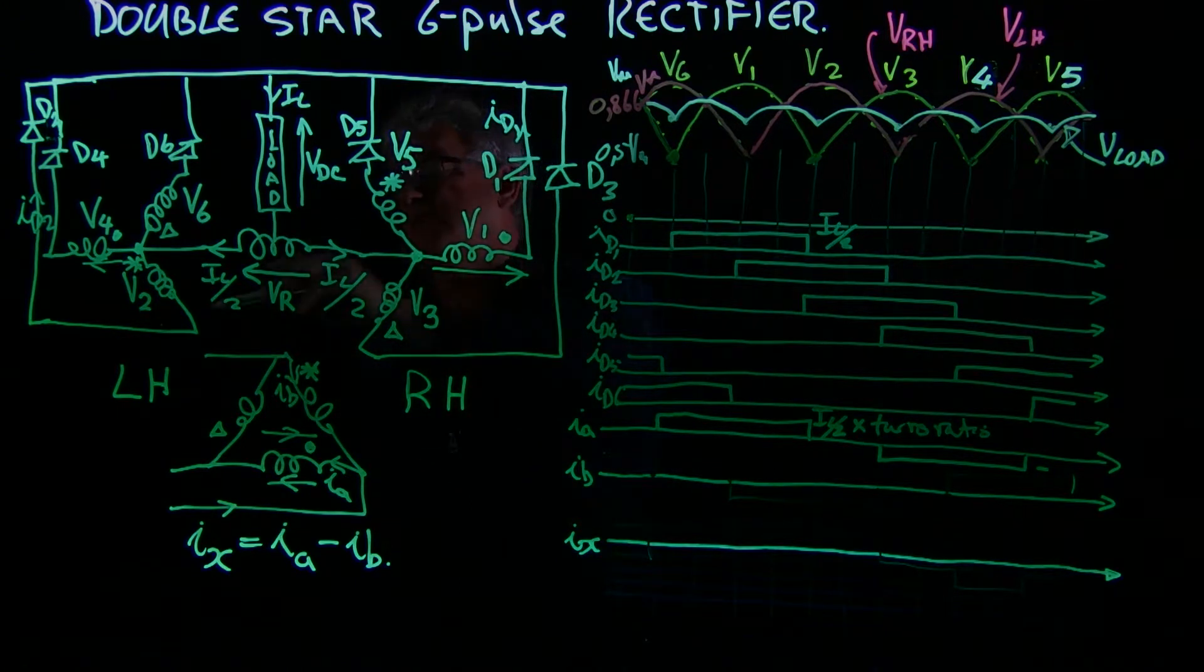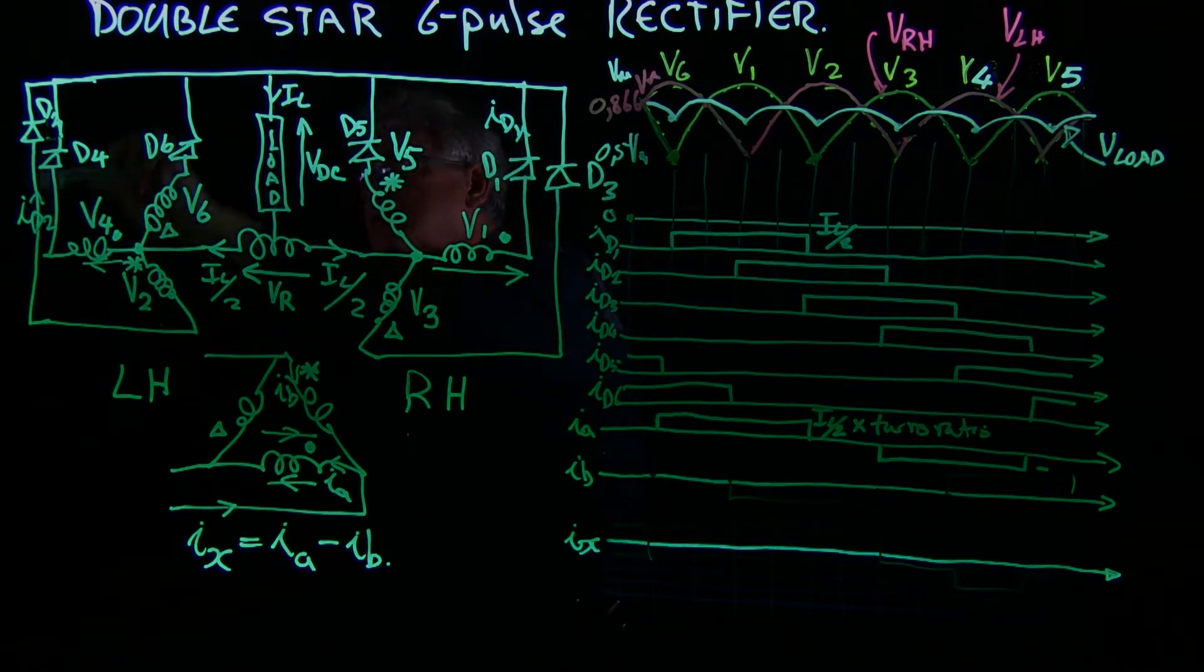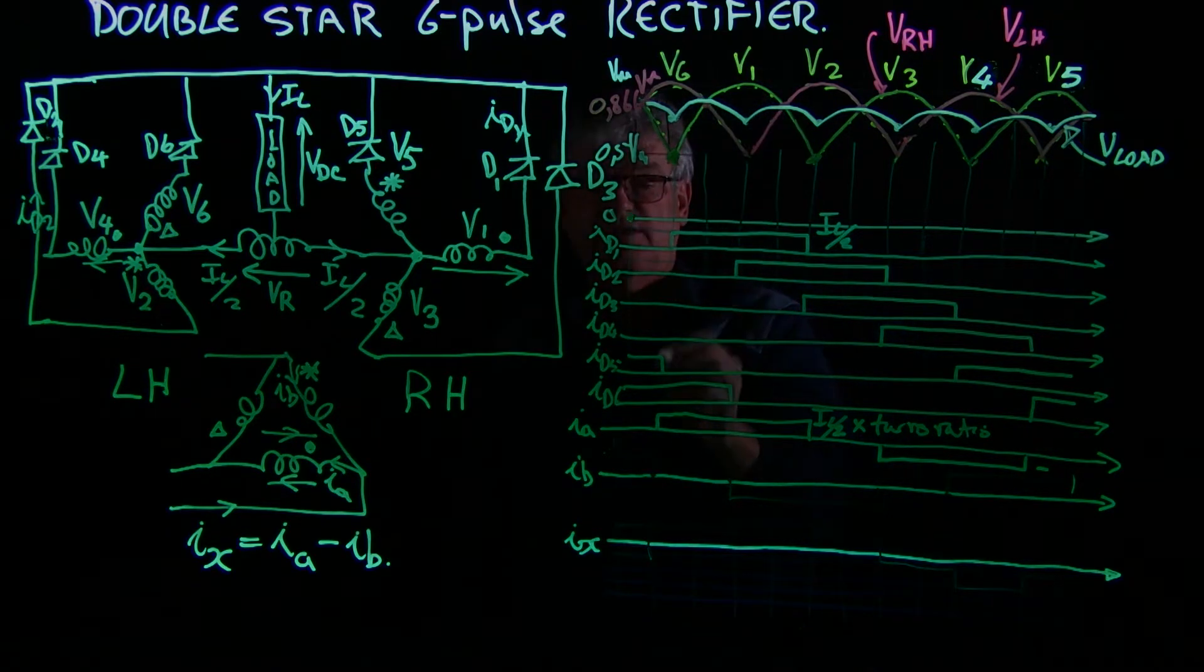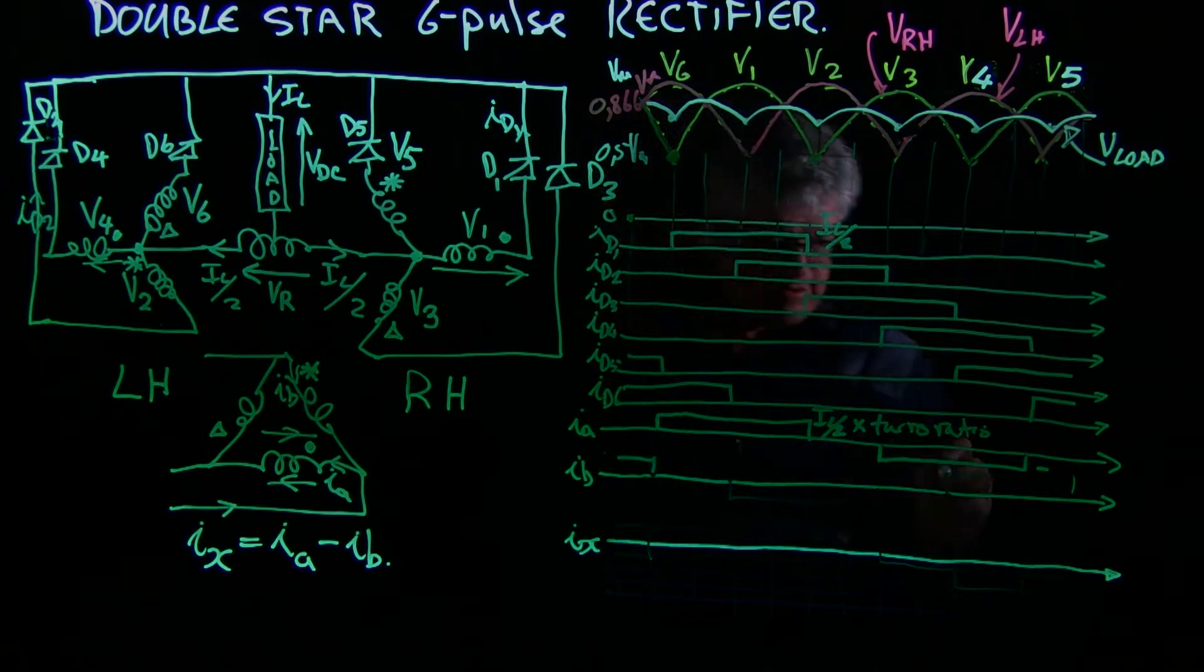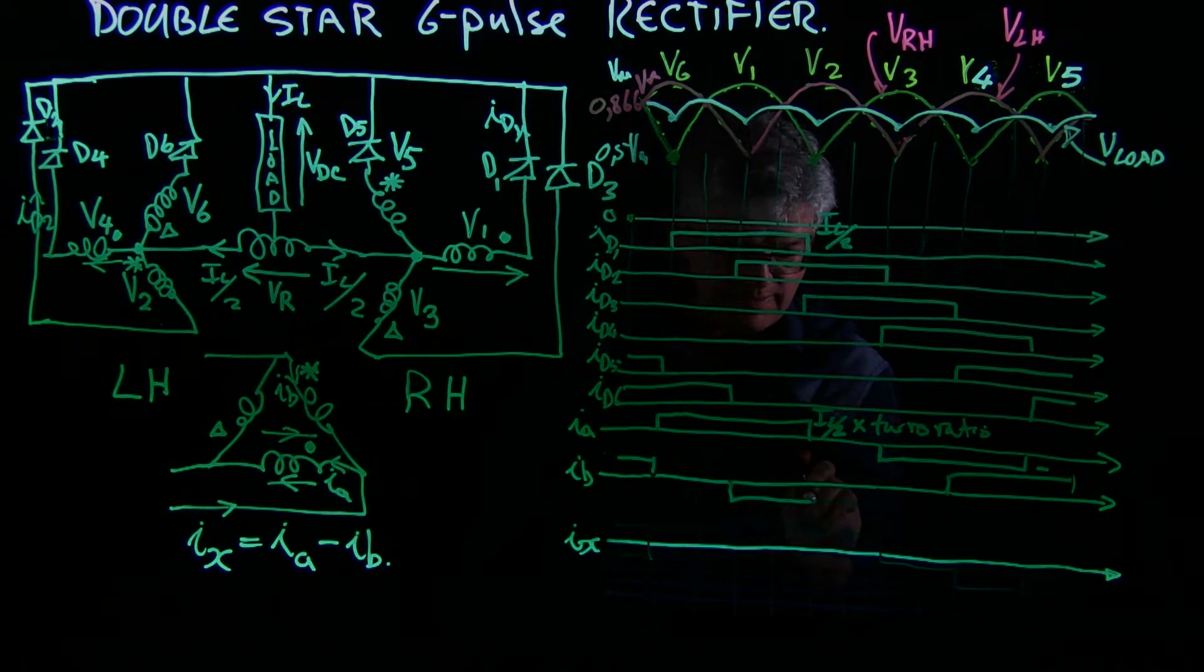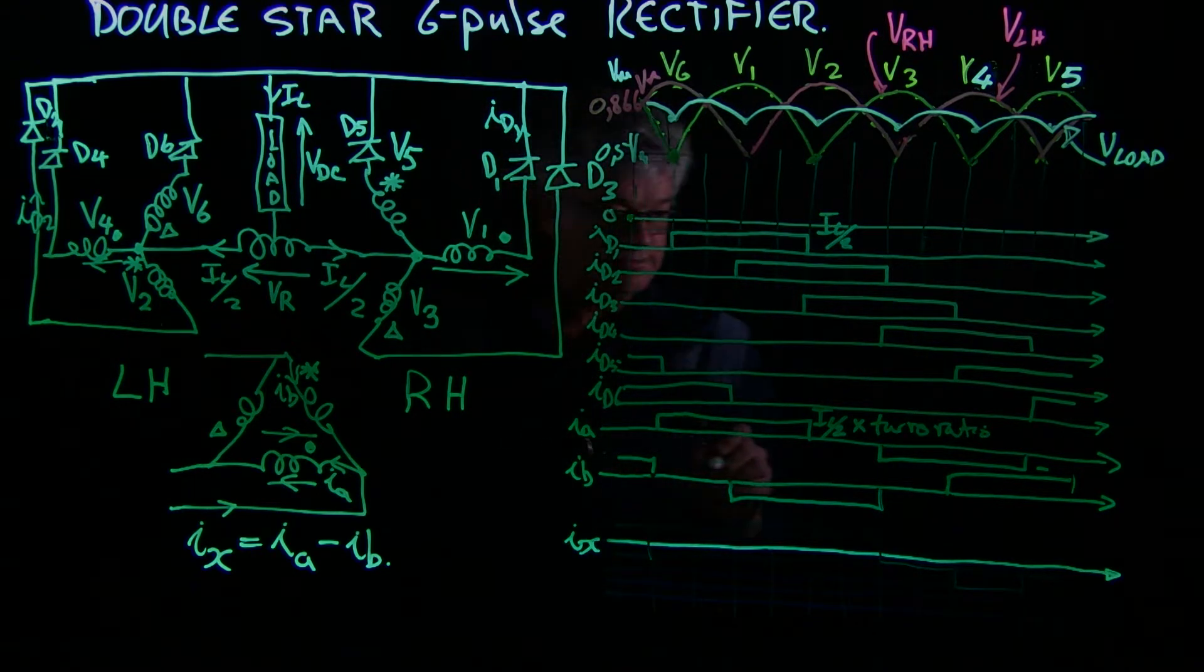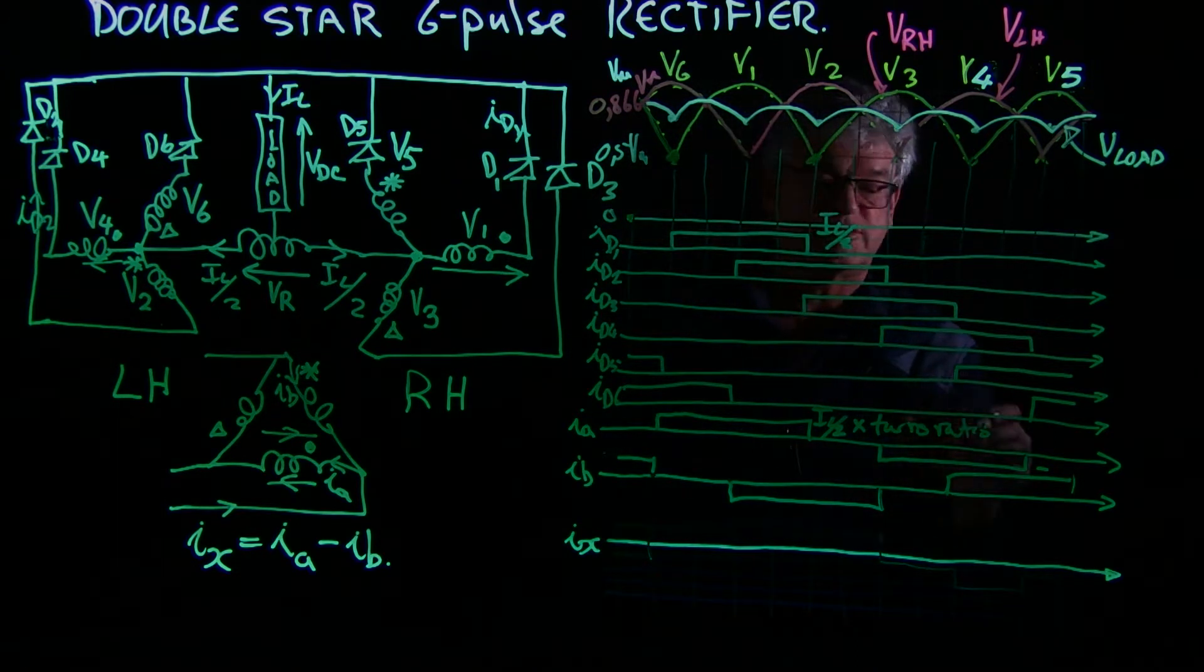so it is ID5 minus ID2, and that should give us this V5, ID5, and there it is for ID2, and also the same, IL over 2 times the turns ratio.